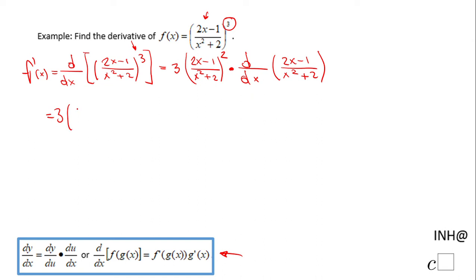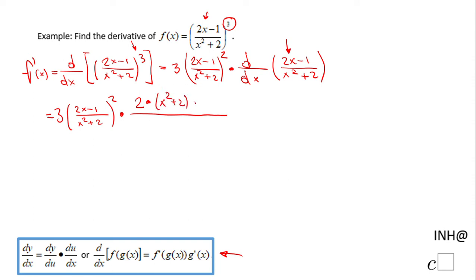We have 3 times the quantity (2x minus 1) over (x squared plus 2) to the second power, times the quotient rule. The quotient rule says: the derivative of the numerator first — which is 2 — times the denominator (x squared plus 2), minus the derivative of the denominator — which is 2x — times the numerator (2x minus 1), all over the denominator (x squared plus 2) squared.